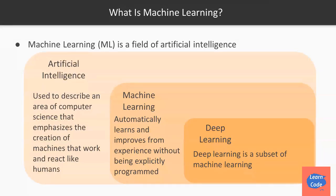You must be hearing some popular terms these days like artificial intelligence, machine learning, and deep learning. Artificial intelligence is a generic term used to describe a machine or computer program which works and reacts like humans. Machine learning is a subset of artificial intelligence which automatically learns and improves from experience. And deep learning is a subset of machine learning which uses highly connected neural networks, which we'll understand in the later part of this section.